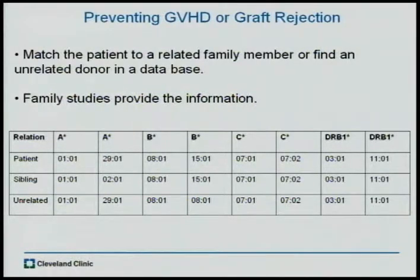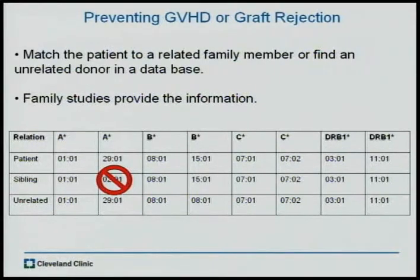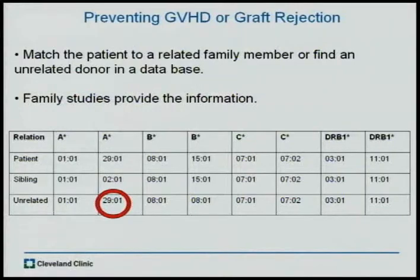In order to prevent GVHD or graft rejection from occurring, we have to try and match the patient to a related or unrelated donor as best as possible by looking at their HLA. Here in this table, we have the A, B, C, and DR loci. The reason why there are two per person is because we get each location of A, B, C, or whatever from our mom and our dad. The patient has an A0101 and an A2901, and the sibling could not be a match because it has an A0201. So we then have to go to the unrelated files. Although they match in the A location, in B the patient has a 1501 where the unrelated is homozygous for 0801, so that wouldn't work either.